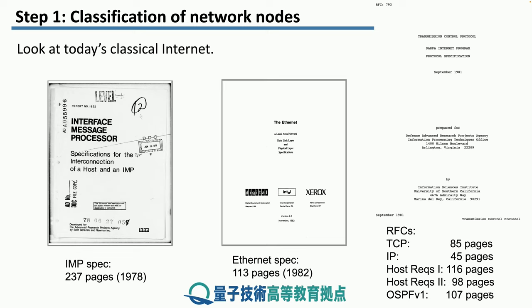Another example of a spec is the Ethernet spec. It doesn't contain only the formats for all the messages, but also all the details about the hardware — how thick the connection cables need to be, or what the connection ends need to look like.